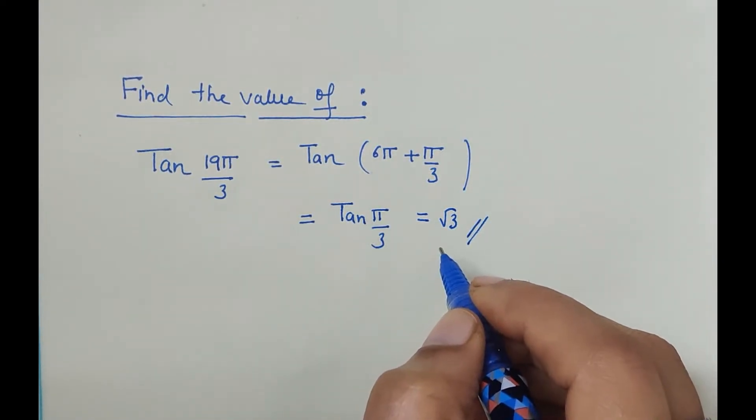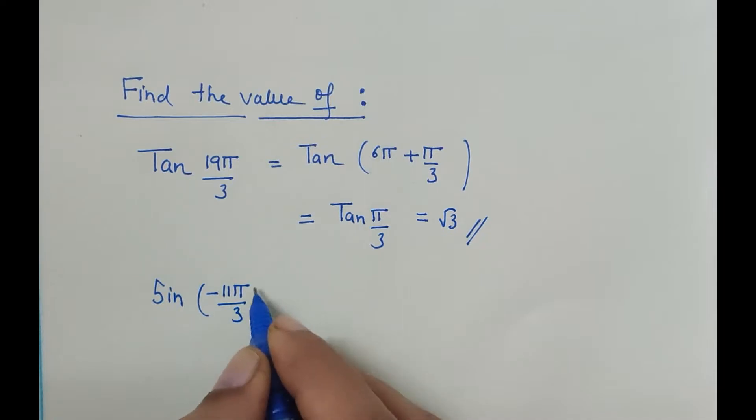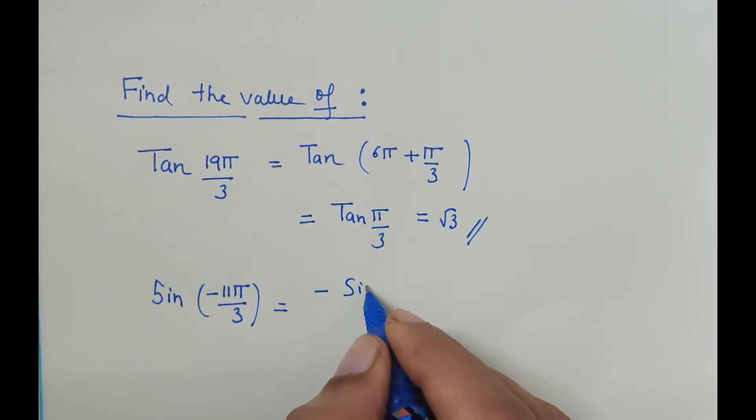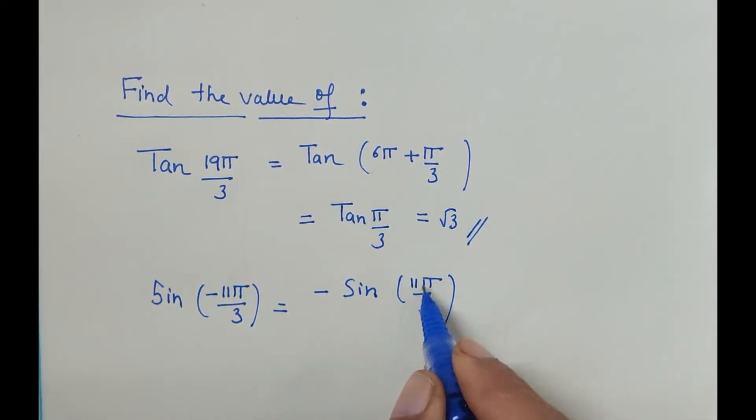Now let's solve one more question: sine of minus 11π by 3. Since sine of minus theta is minus sine theta, let us take out the negative sign: minus sine 11π by 3. As I said in the previous question, since 11 is greater than 3, we find out the nearest multiple: 3 fours are 12, but 12 is more, so we will subtract the angle.